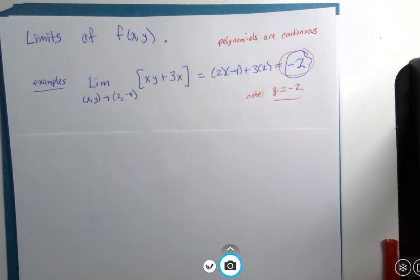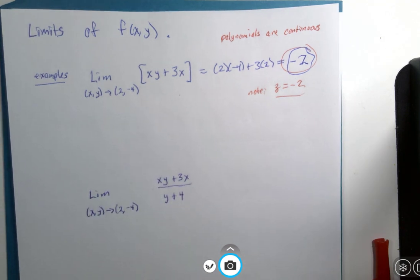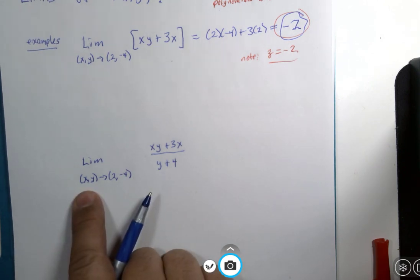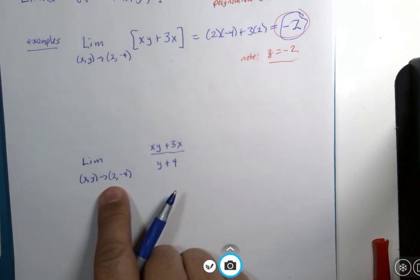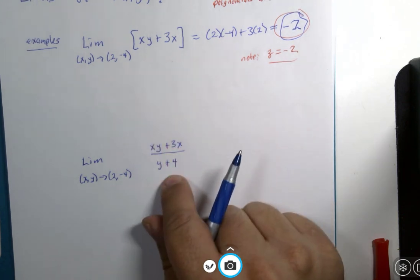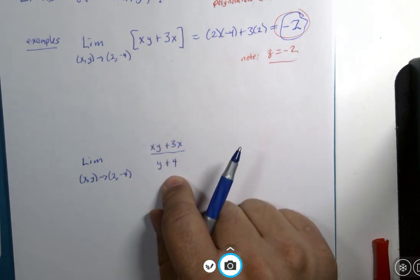So let's look at another variation, something else that we can sort of assume and work with. x, y still approaches the point 2 comma negative 4. The numerator is this function here, but the denominator is added in here. So this is called a rational function.